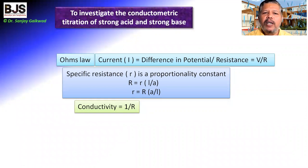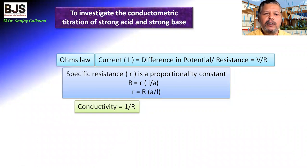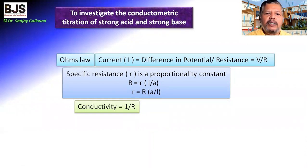This type of titration we can do with the help of indicators. However, indicators show the change in color only after the end point, and therefore at the equivalence point, we cannot stop the titration precisely — we cannot find the exact equivalence point. But with the help of this instrumental method of titration, like the conductometer, we can see what is the exact equivalence point of the titration.